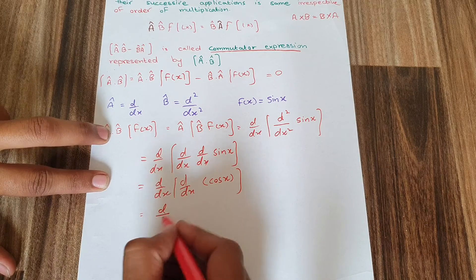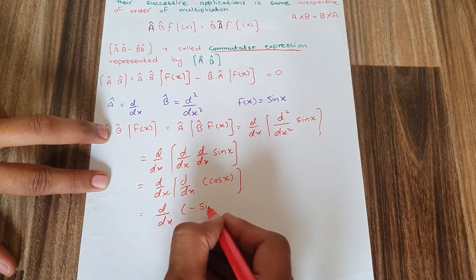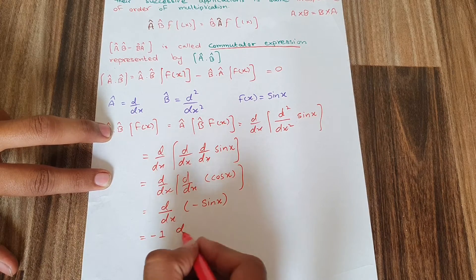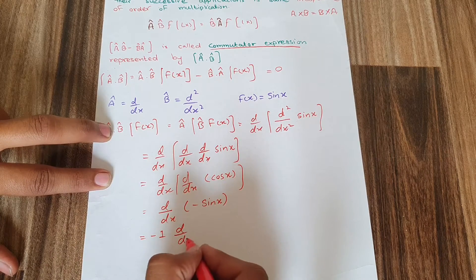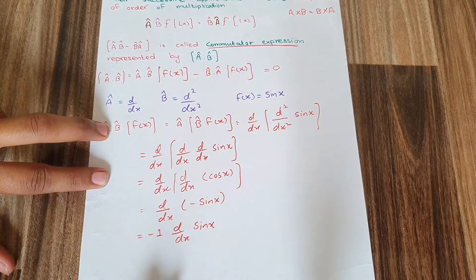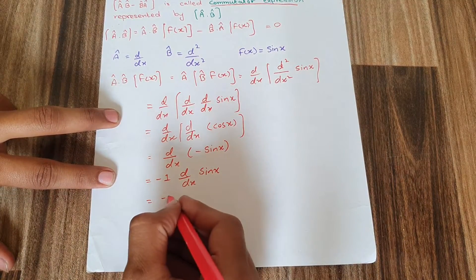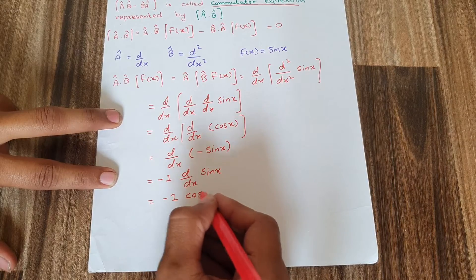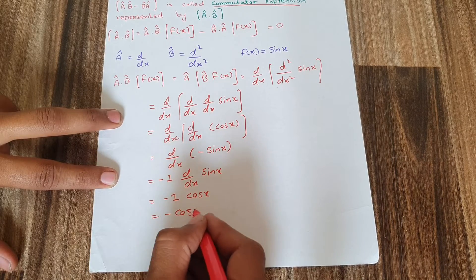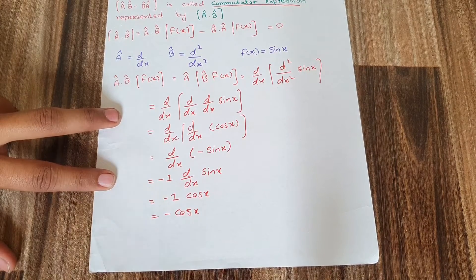The minus one is a constant, so it goes out, and the derivative is applied on sin(x). Applying the derivative on sin(x) gives cos(x), so minus one multiplied by cos(x) gives an answer of minus cos(x). This was the answer when B is applied first and A is applied later.